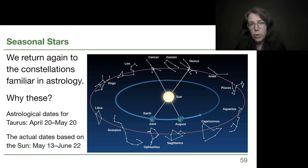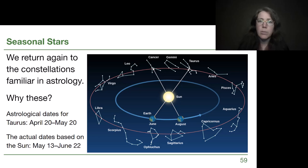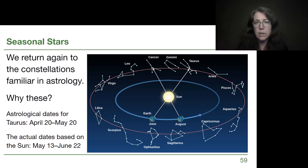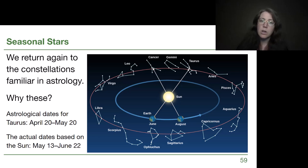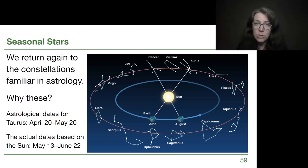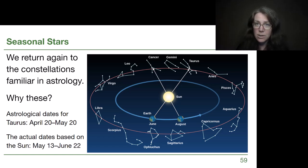As the earth orbits the sun every year, the stars that appear to be behind the sun change — that's where we get the astrological star signs. But the stars that are in the opposite direction from the sun also change, and those are our night sky constellations that are visible.